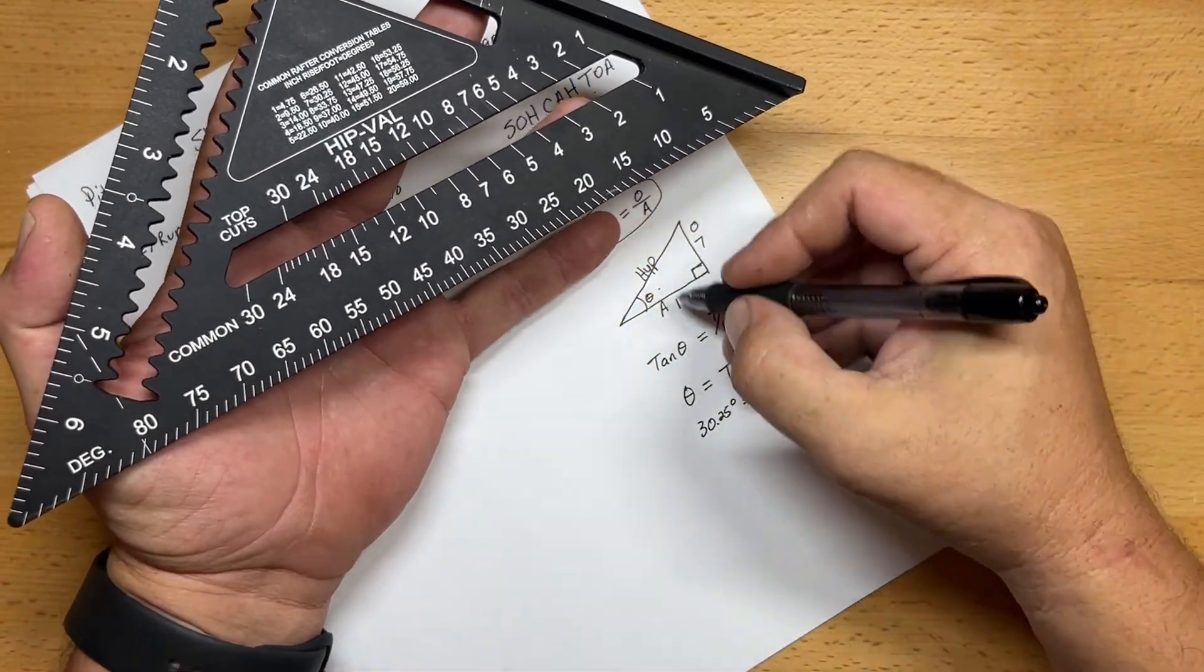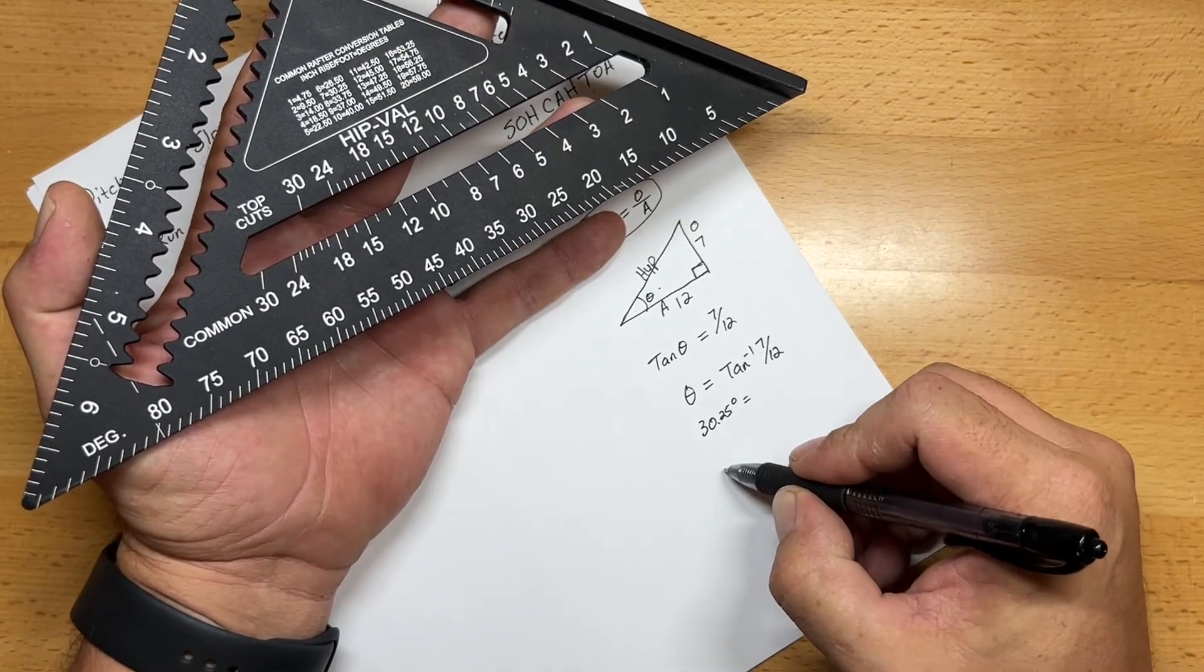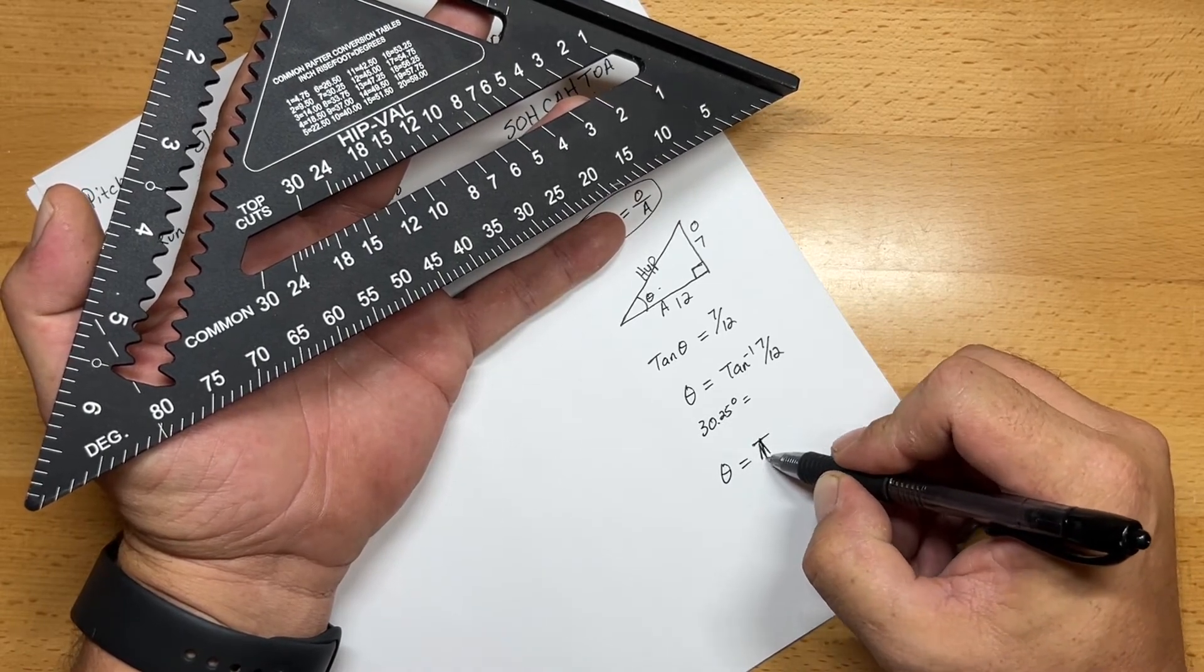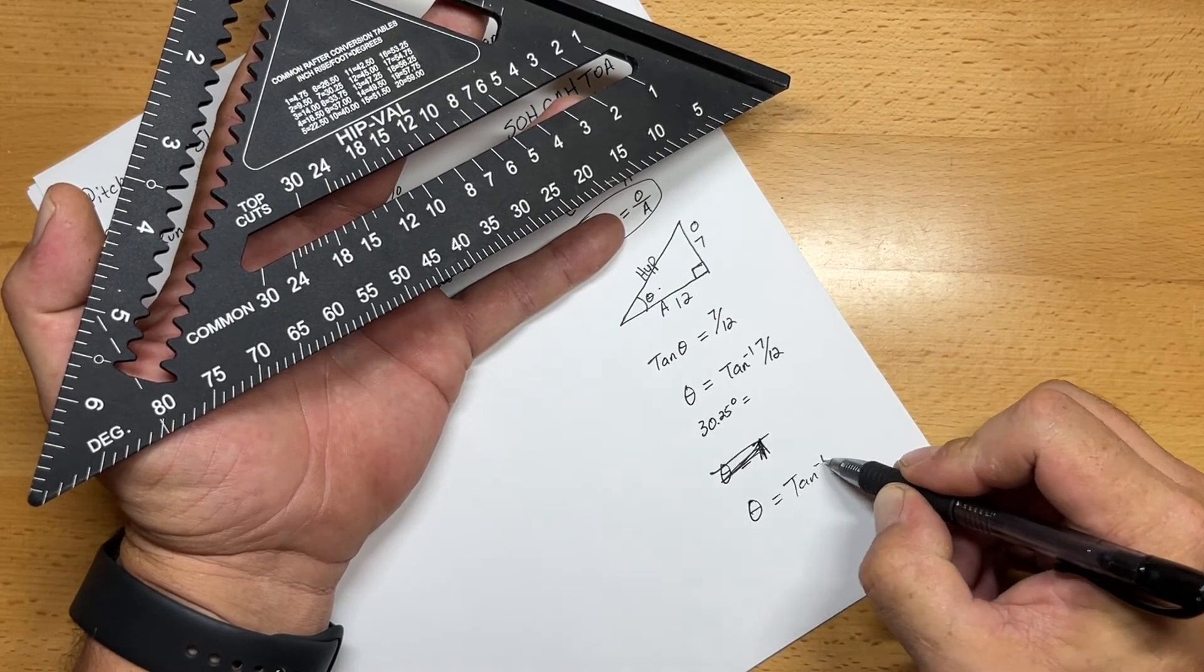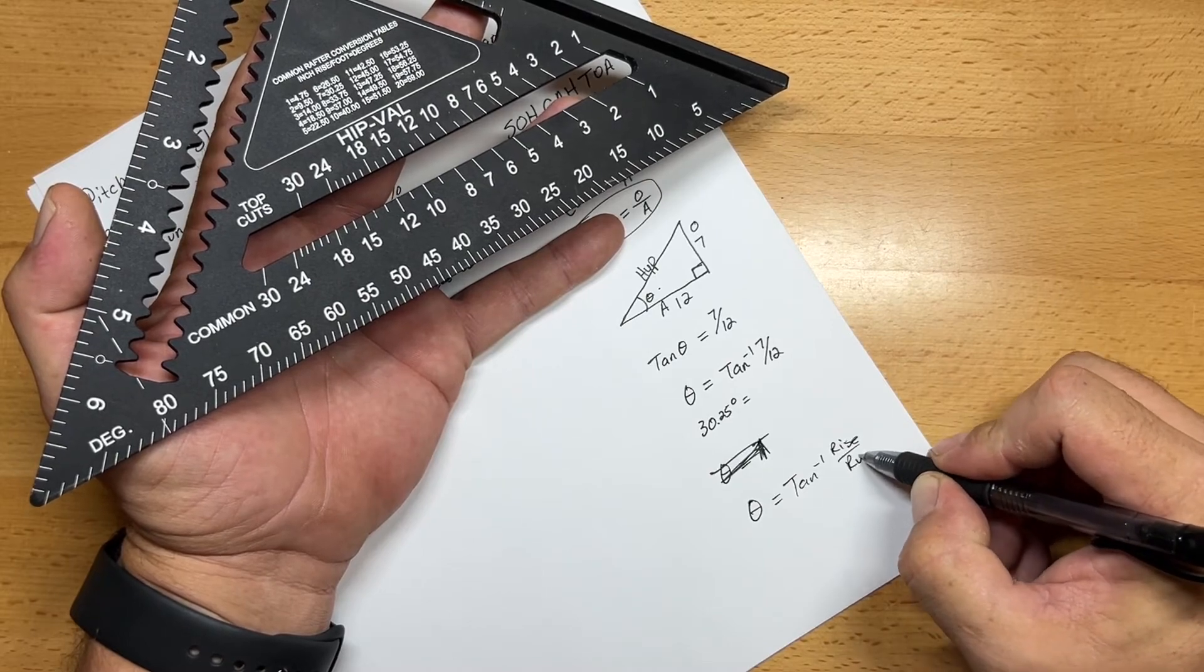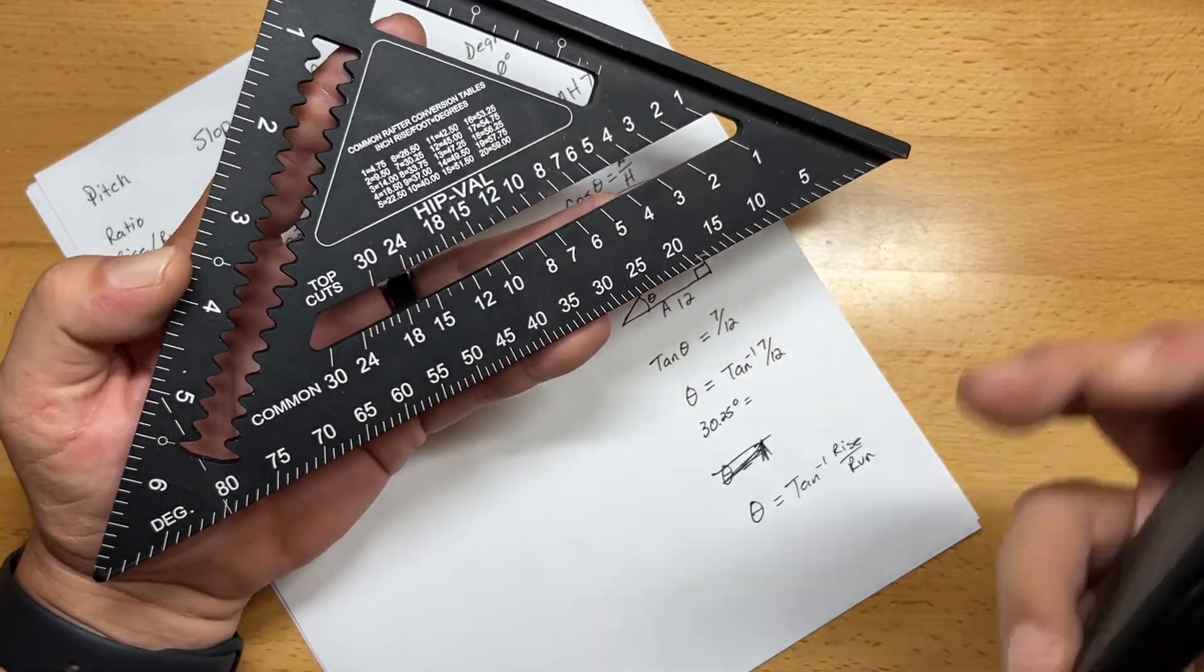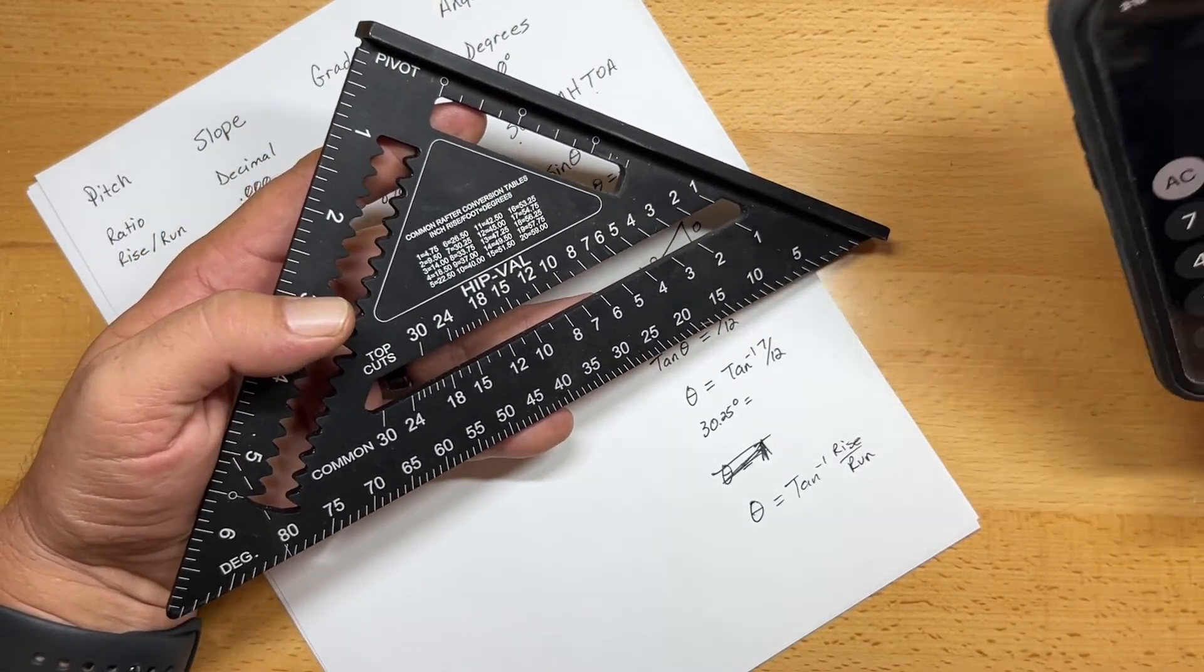So with any angle that you don't know, if you know the rise and the run, your angle is equal to the arc tangent of your rise over your run. And that's how you calculate it. So it's pretty easy to get, and that's how they come up with all these values. So we can do another one, and I'll show you that these are actually not exact, but they're rounded to the nearest quarter degree.